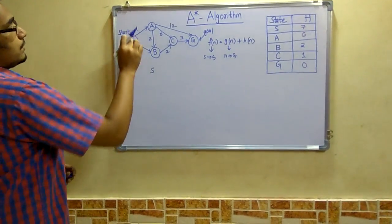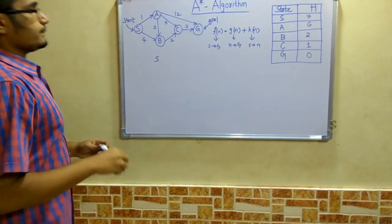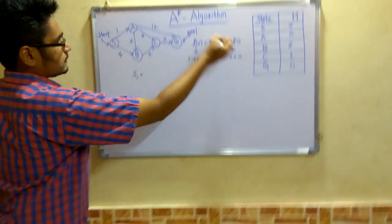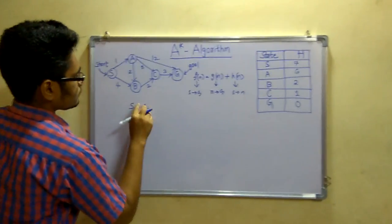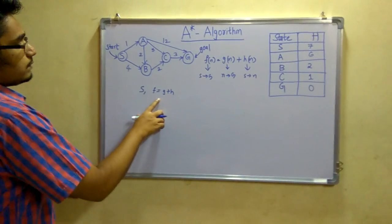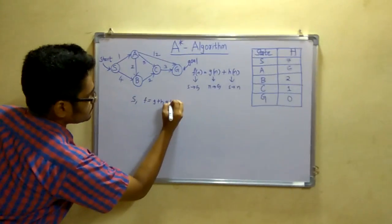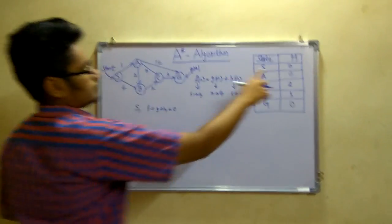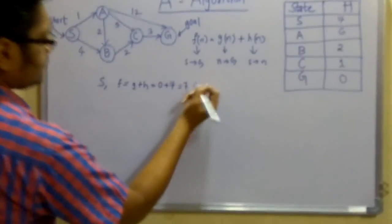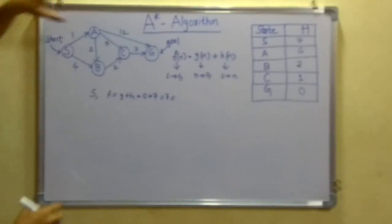H(n) is the heuristic value from the initial state to state n. To start with, we have the S node. For the S node we calculate using F = G + H. The distance from S to S itself is 0, so G is 0, and H is the heuristic value of S, which from the table is 7. So it is 0 + 7 = 7. From S there are two paths possible: S to A, and S to B.